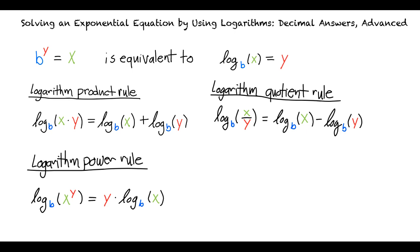We can use these rules to rewrite exponential equations in different forms that will allow us to solve for unknown variables. Then, using our calculators, we can solve for the unknown variables in decimal form. Okay, I think I understand this all. Can we try out an example problem? Definitely.